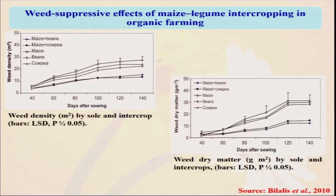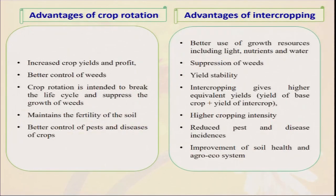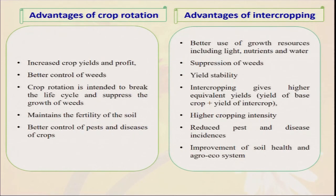The weed-suppressive effect of maize-legume intercropping: when using only sole crop with no intercropping, weed count is higher. When we are cropping maize plus bean and maize plus cowpea intercropping, weed density is less at all stages. Similarly, if you check the weed dry matter, we are getting the same result — from 80 to 140 days, wherever we use this intercropping, our weed biomass is also less. So when weed biomass is less, they will compete less with the crop for different types of nutrients, water, and space, and our crop yield will be more. Crop rotation increases crop yield and better control of weed — intercropping is also the suppression of the weed. Crop rotation maintains the fertility of the soil, and intercropping with legumes also enhances soil fertility. They both are also known to reduce pest and disease.